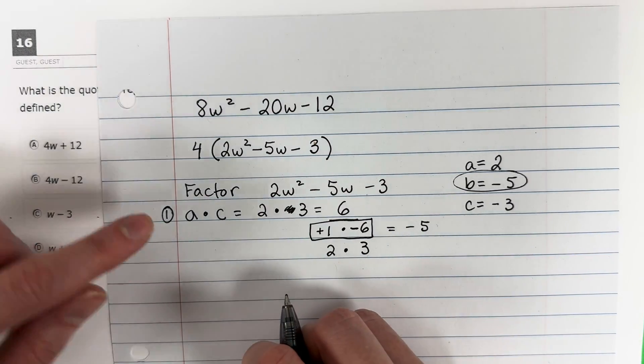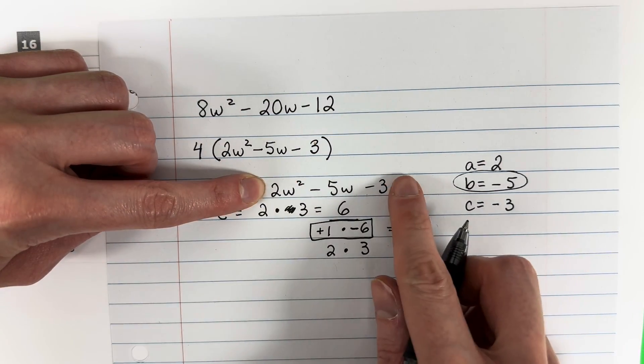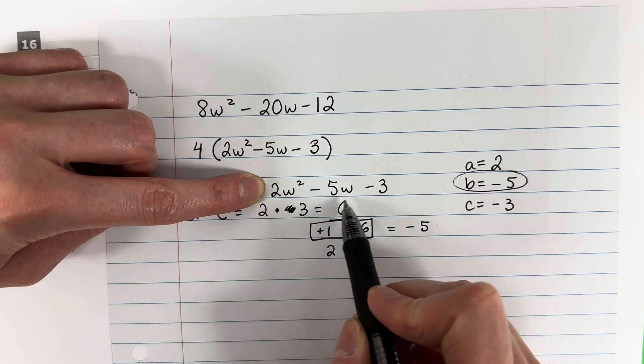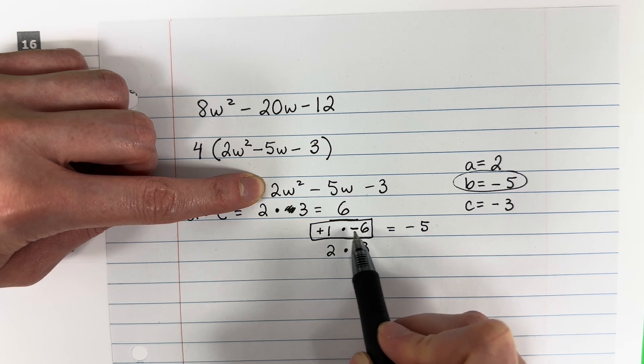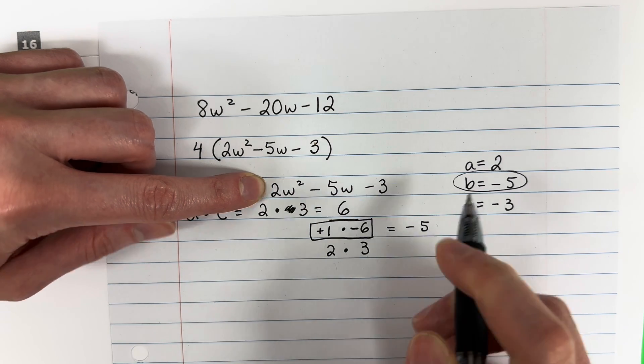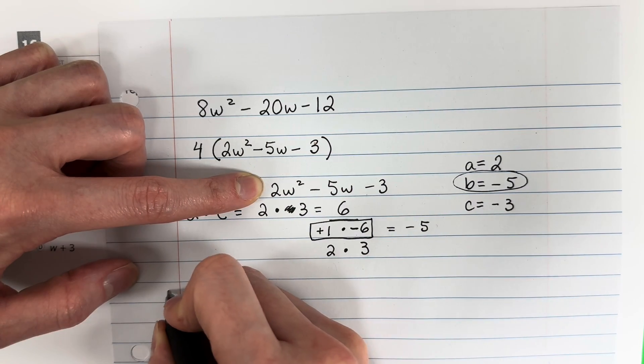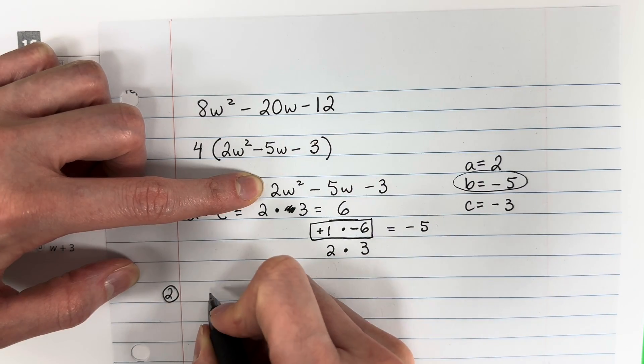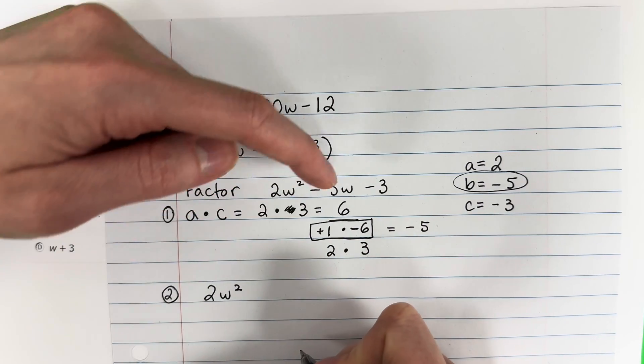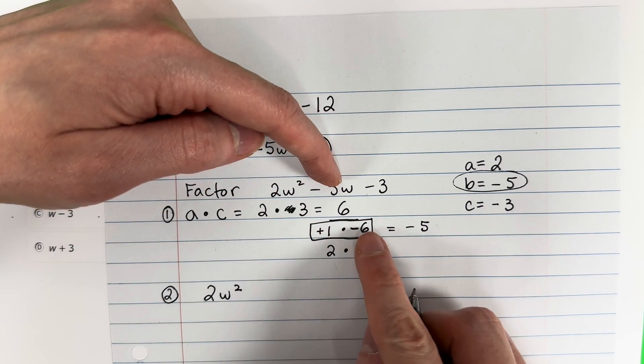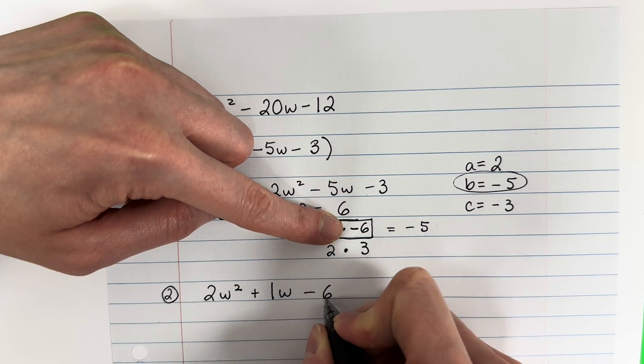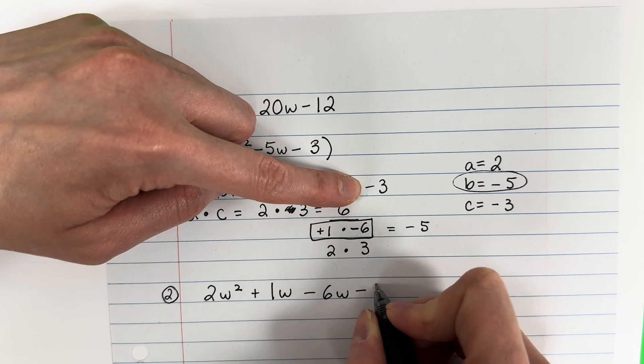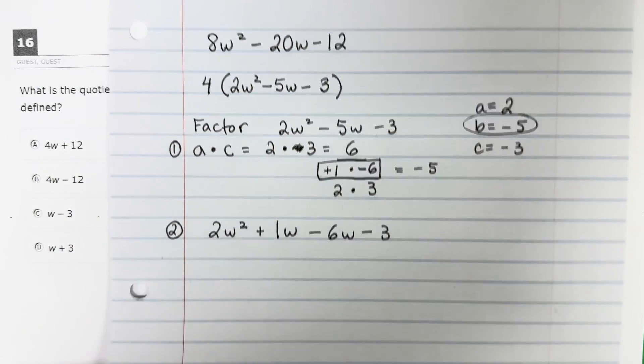So what we're going to do is we're going to go ahead and rewrite this. We're going to copy it all except the B, the negative 5w. I'm going to replace it with positive 1w and negative 6w. I can do that because 1 minus 6 is the same as negative 5. I'm going to copy 2w squared, plus 1w minus 6w, and then copy that C minus 3.